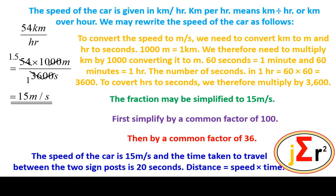In order to determine the distance between the two signposts, we multiply the speed by the time taken to travel between those two signposts.